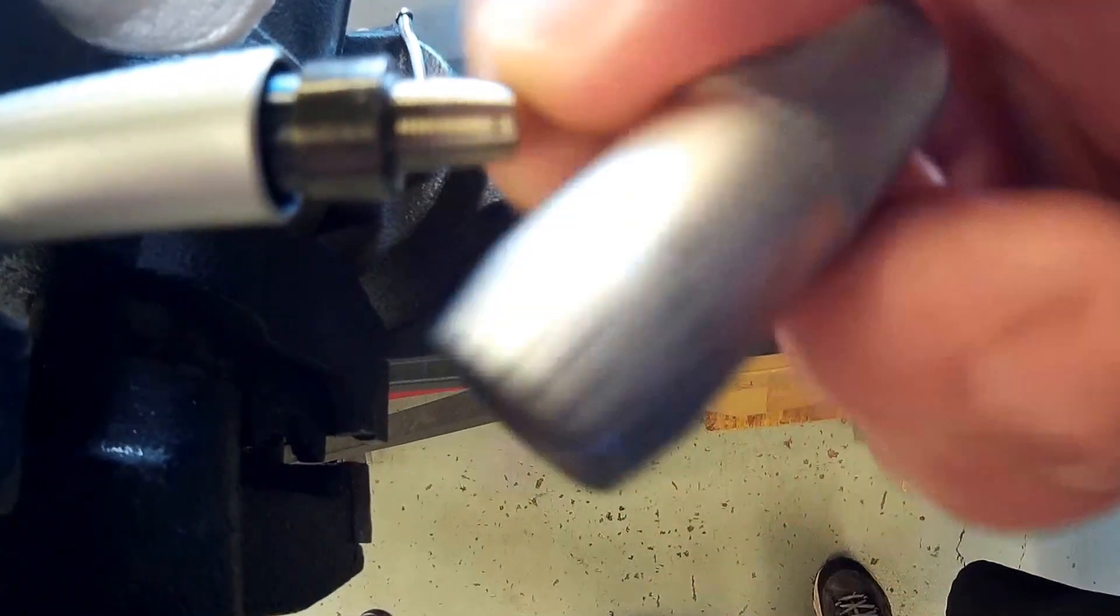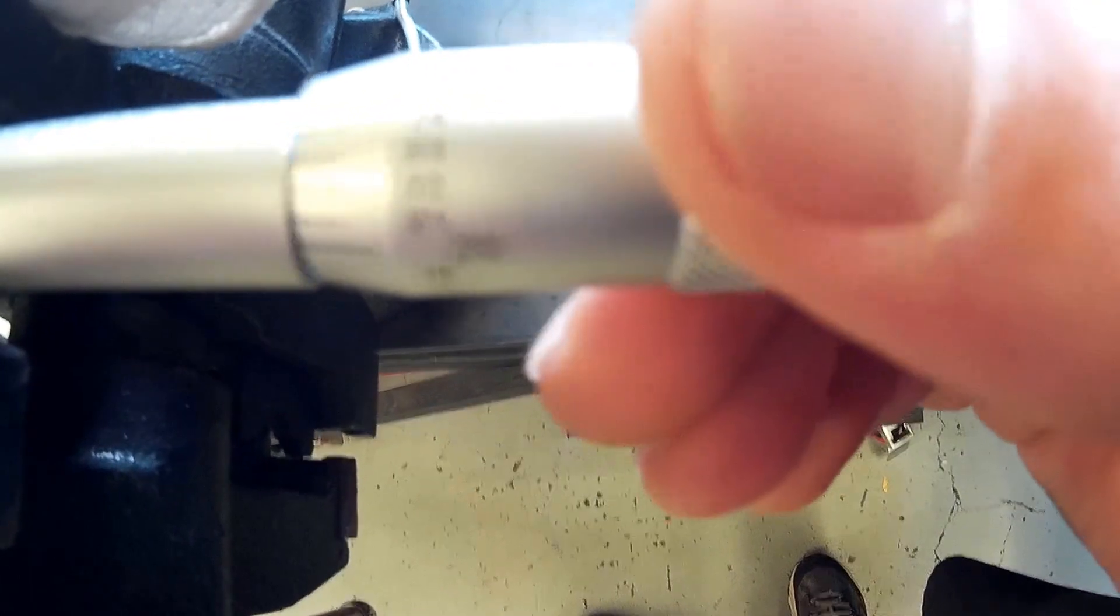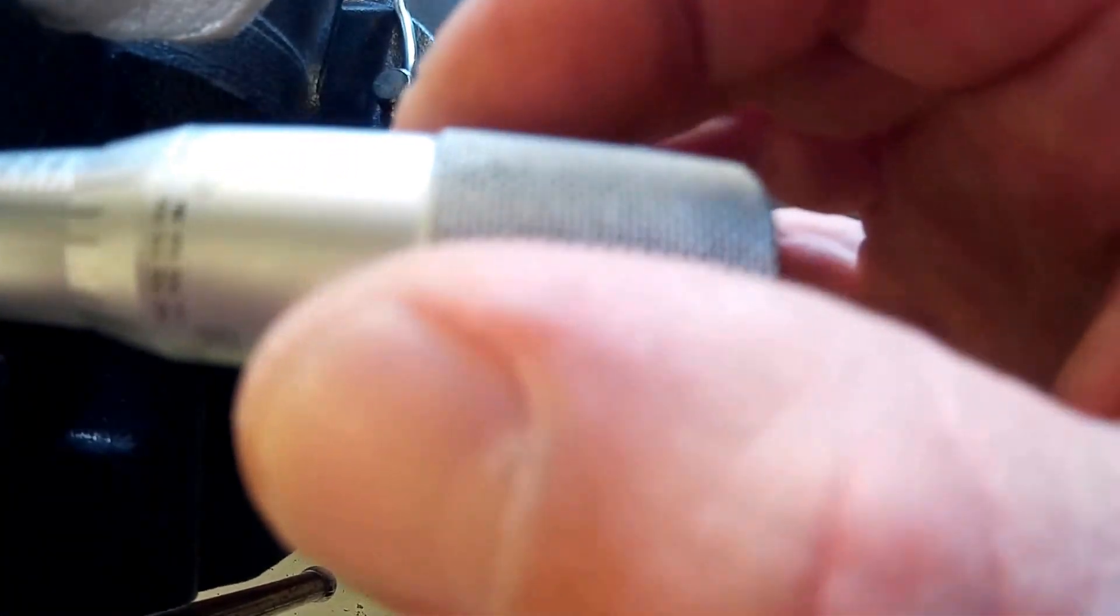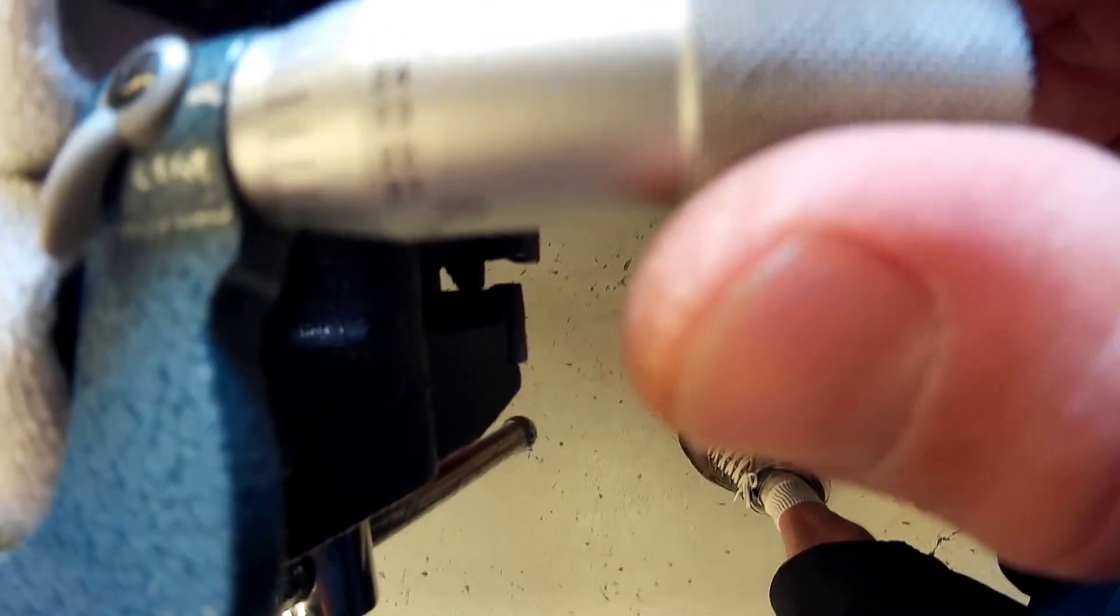So the ratchet just pinches those tapers together, and sometimes if somebody tries to over tighten it, it will spin on those tapers and that's when it gets so far off.